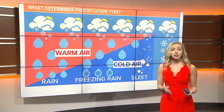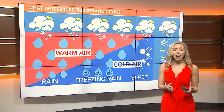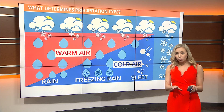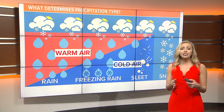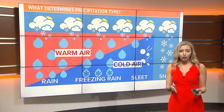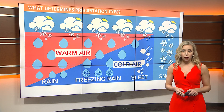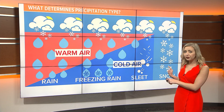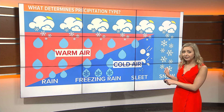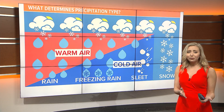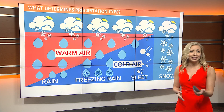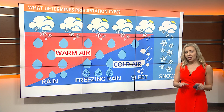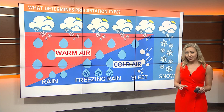Now let's talk about sleet. Sleet begins as ice high in the atmosphere, falls through a thin layer of warm air, and then into another larger layer of cold air, giving it enough time to refreeze before it hits the ground. Finally, snow. Snow reaches the ground when it only encounters layers of the atmosphere below 32 degrees.